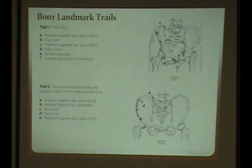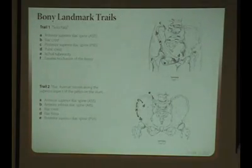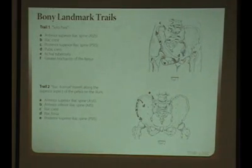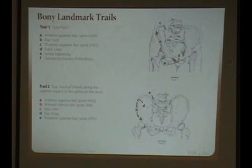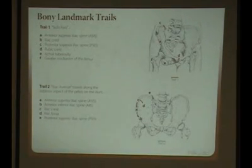The rectus femoris goes from the AIIS, crosses the hip, and goes into the patella. Coming off of the ASIS, you have the tensor fascia latae — that comes off of that and part of the crest right here. And then what's the one that goes across here? The sartorius — that comes off of the ASIS too.